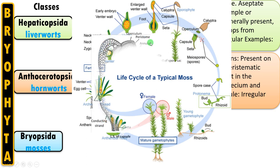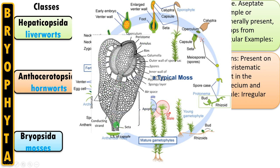Let us see the structure of this capsule in detail. There is a seta, then a conducting strand that supplies nutrients to the developing spores. Here you can see a lid-like opening called the operculum. Then there are peristome teeth and annulus made up of thin-walled hygroscopic cells that help in dispersal of spores upon maturity. Then there is columella — the sterile tissue — and spores are formed inside from sporogenous tissue. So a well-developed capsule in Bryopsida with an efficient mechanism helps in efficient dispersal of spores. Spores falling on a suitable substratum first develop into protonema, then a leafy gametophyte forms again.